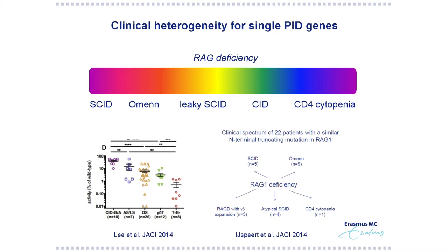Lee et al. has shown in a large study that there's a phenotype-genotype correlation. If there's a mutation in the RAG gene, it can be a full null mutation without residual activity, leading to SCID. But if there is some residual activity, because the mutations do not disrupt the complete function of the protein, you have a different and potentially milder clinical phenotype. Even so, in our group we showed in a series of 22 patients with the same mutation, you can also have all the different variants of SCID, meaning it's not only the mutation but also other modifying genes that influence the clinical picture.